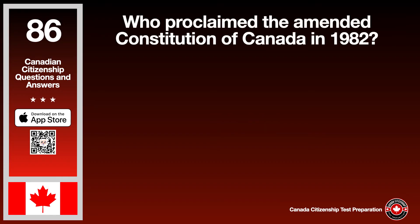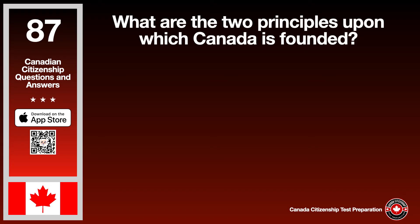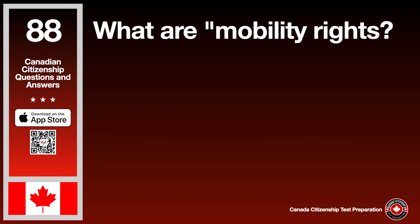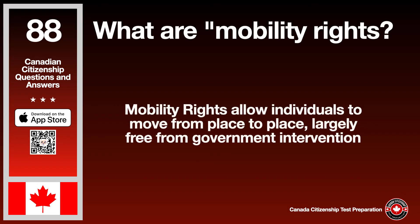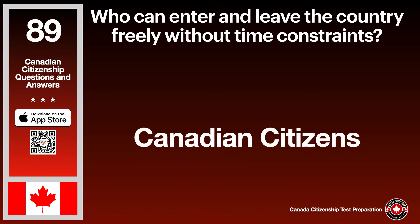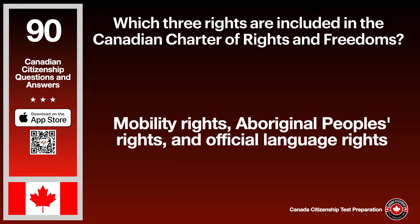Who proclaimed the amended Constitution of Canada in 1982? The answer is Queen Elizabeth II. What are the two principles upon which Canada is founded? The answer is the supremacy of God and the rule of law. What are mobility rights? The answer is mobility rights allow individuals to move from place to place, largely free from government intervention. Who can enter and leave the country freely without time constraints? The answer is Canadian citizens. Which three rights are included in the Canadian Charter of Rights and Freedoms? The answer is mobility rights, Aboriginal peoples' rights, and official language rights.